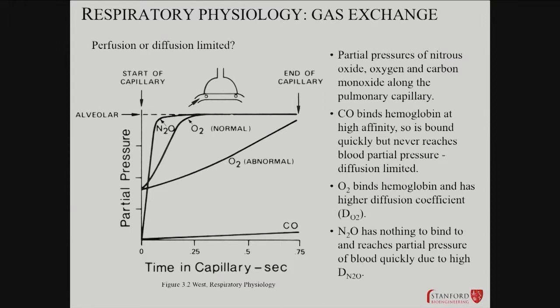Let's start with carbon monoxide as an extreme. The interesting thing about carbon monoxide is that it's what we call diffusion-limited — it never reaches a very high partial pressure in the blood, it rises very slowly. It has a very high affinity for hemoglobin, so it binds quickly. But the partial pressure never reaches the maximum level present in the alveolar sac. Opposite to that, nitrous oxide has nothing to bind to — it's completely inert as far as the blood is concerned — so its partial pressure in the blood matches the air very quickly.